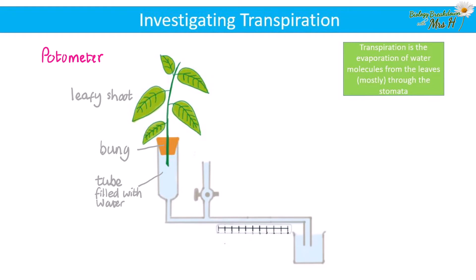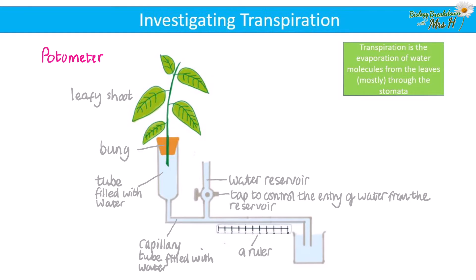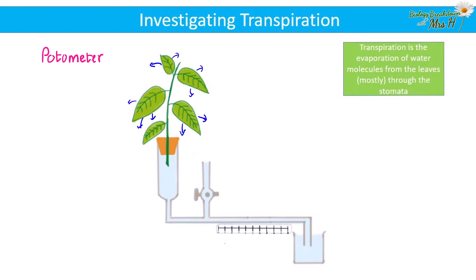This tube is continuous with a capillary tube which is also filled with water, a water reservoir here, and a tap to control the entry of water from the reservoir, a ruler or some kind of measuring scale, and the capillary tube end is in the beaker of water. This equipment will be held up with a clamp and a stand. I haven't drawn it here just to keep the diagram simple. As water evaporates from the leaves, more water is drawn up into the leafy shoot from the water below.